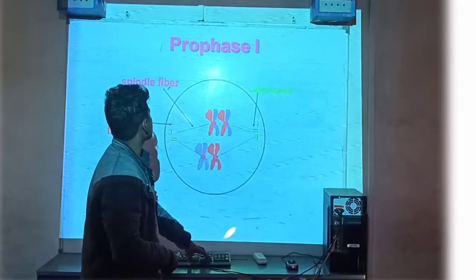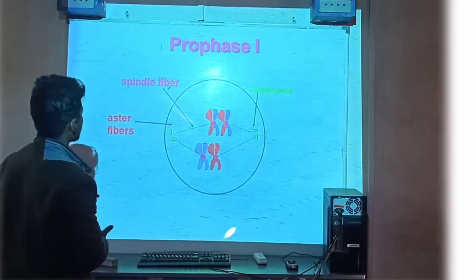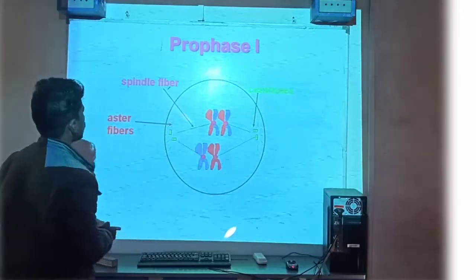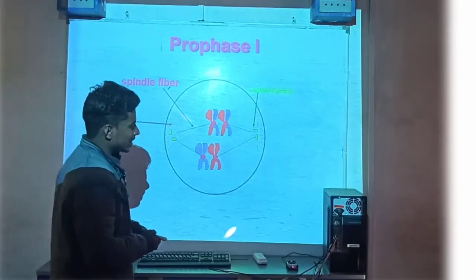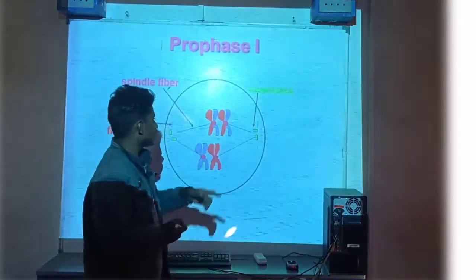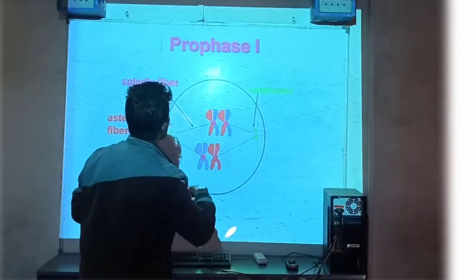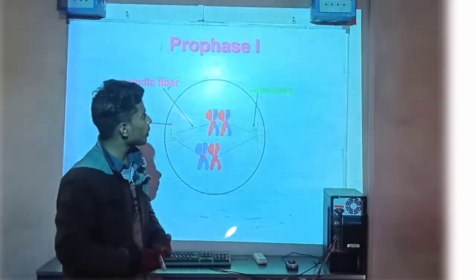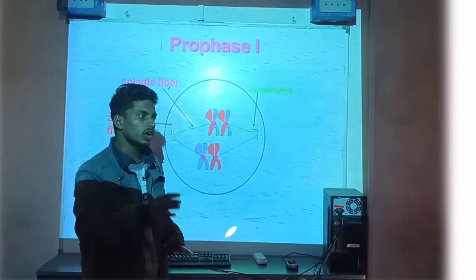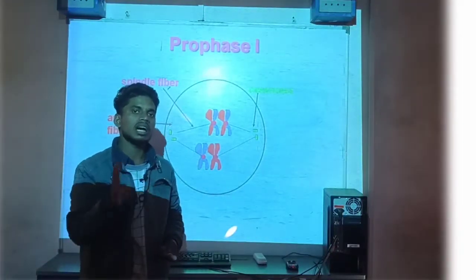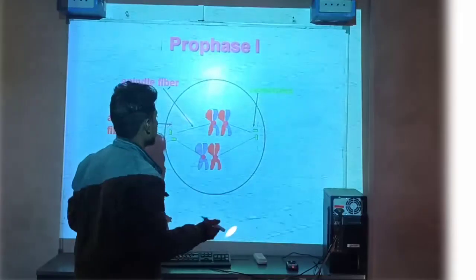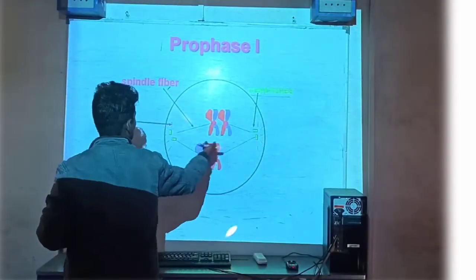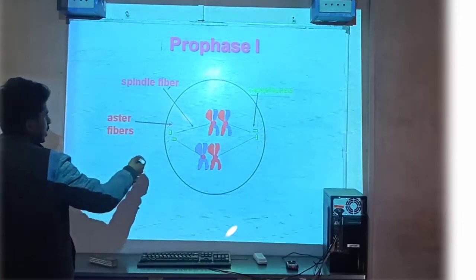Okay, Prophase First के बारे में — जहाँ से कल छोड़ा था, वहीं से आगे बढ़ना है। तो जो आपके paternal और maternal chromosome हैं, वो यहां दिखाए गए हैं। Prophase First में cell growth करते हैं, और chromosomes के ज़्यादातर हिस्से double होने लगते हैं। उसमें से एक centriol है — यह दो हिस्सों में टूट जाता है।